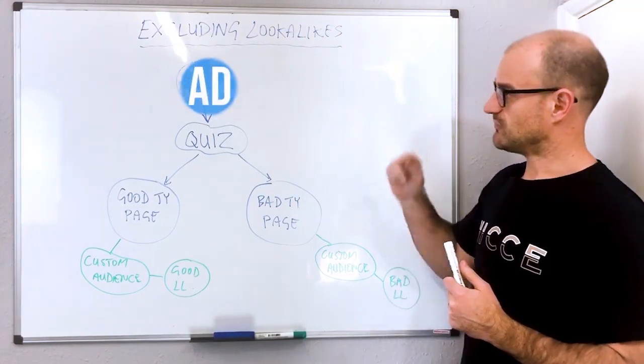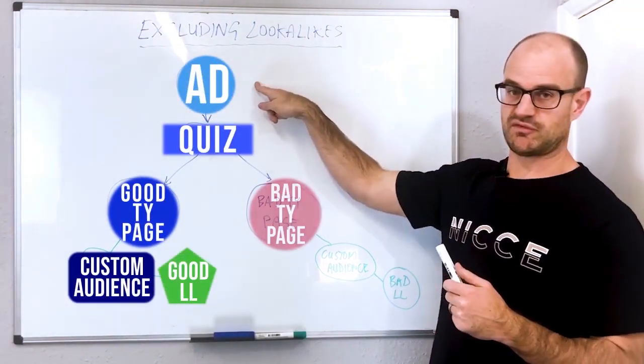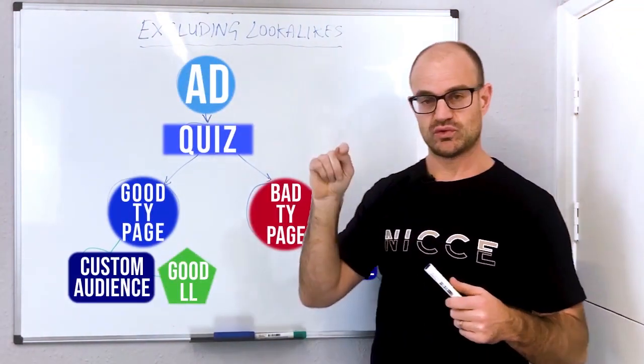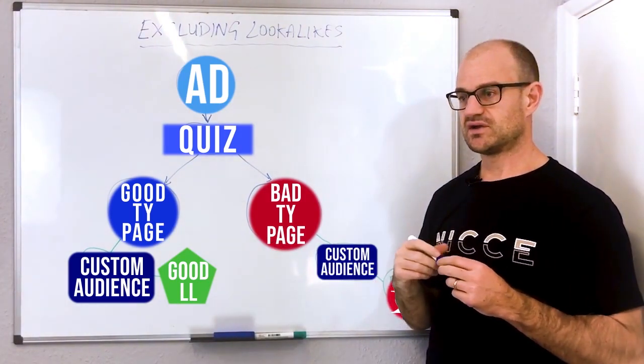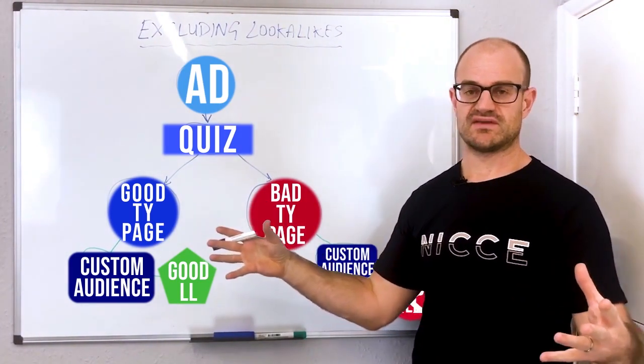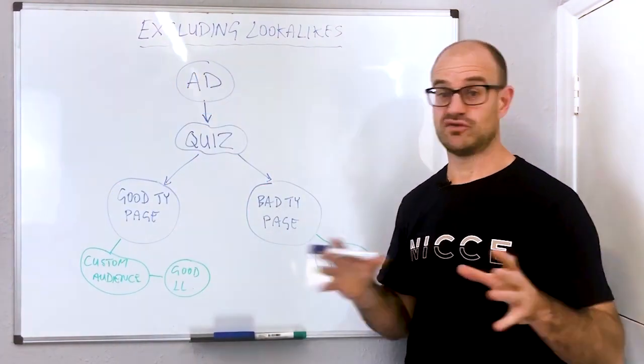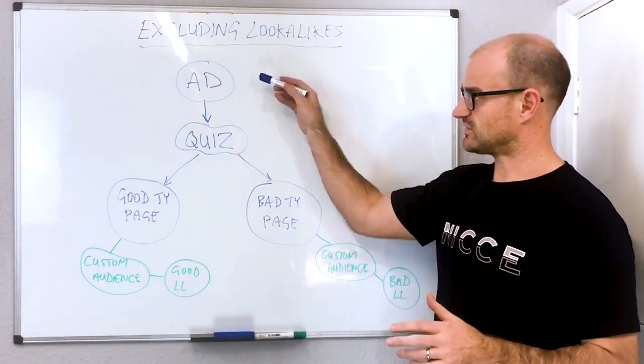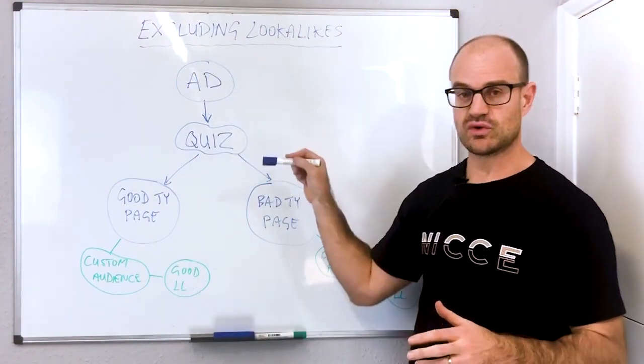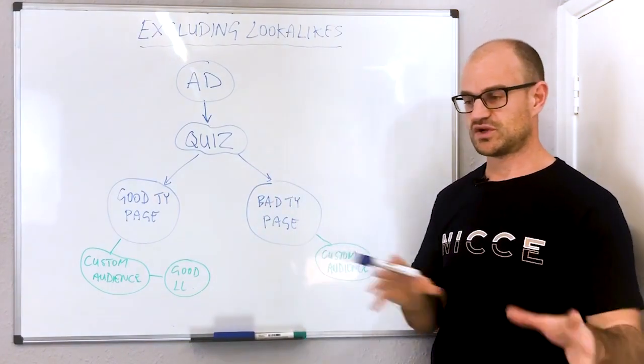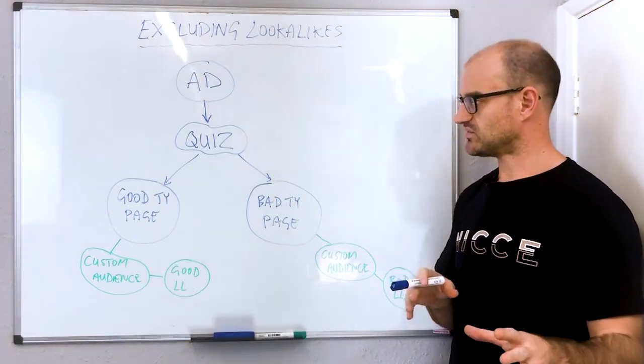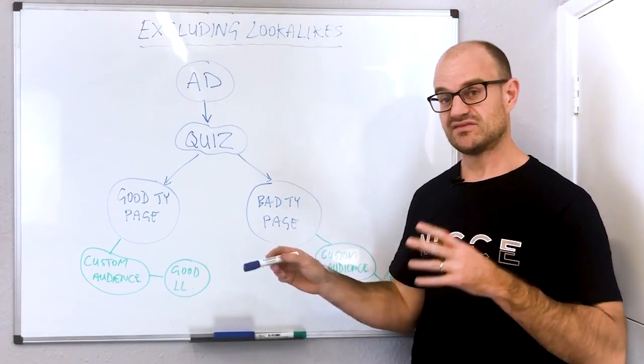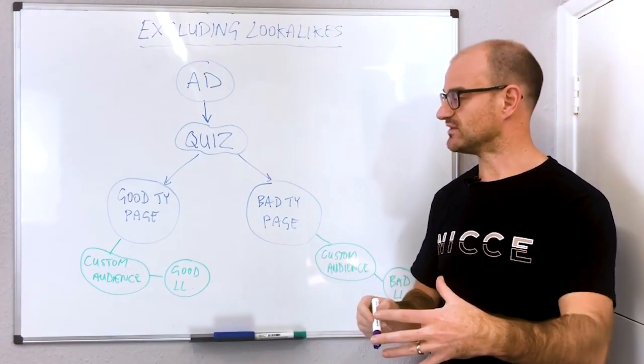If you're creating an ad on the Facebook platform and sending people to a quiz - something like 'check if you qualify for XYZ, take this quiz to find out' - they go to a quiz and are put through a number of questions. What happens is that based on the answers and criteria they put into that quiz,